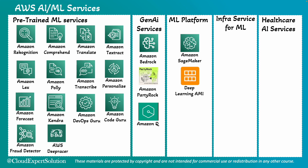These AMIs are customized and pre-built for machine learning use cases — they are not regular EC2 AMIs. AWS Deep Learning Containers are optimized container images for deep learning use cases. You can quickly deploy deep learning models in a scalable manner using these deep learning containers.